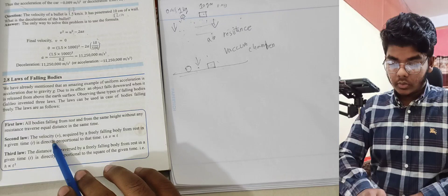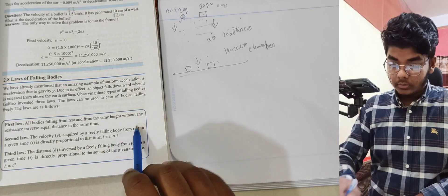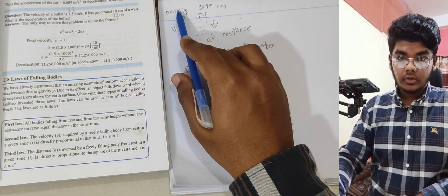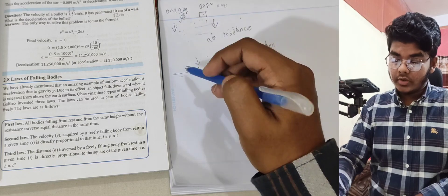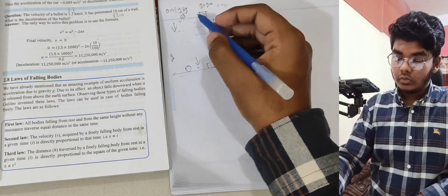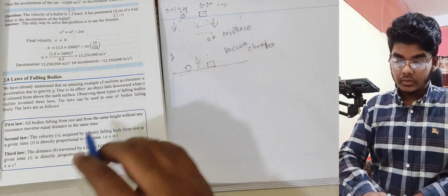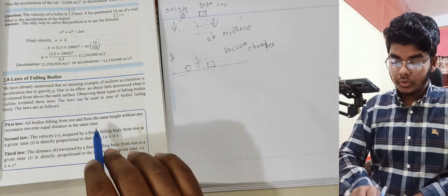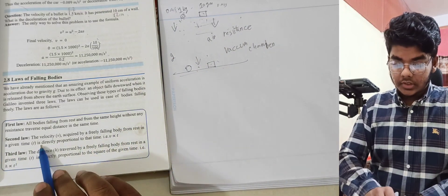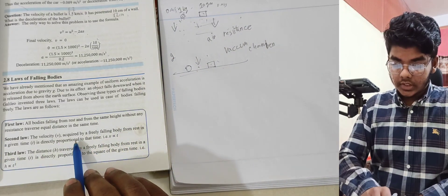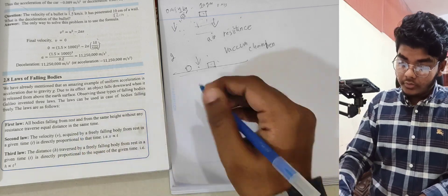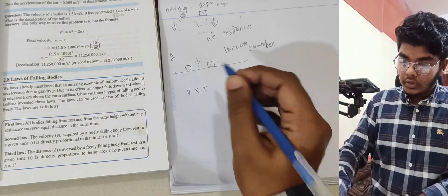Second law: the velocity acquired by a freely falling body starts at zero — meaning initial velocity is zero — and is governed by acceleration due to gravity. From rest, in a given time t, the velocity is directly proportional to that time: v ∝ t.